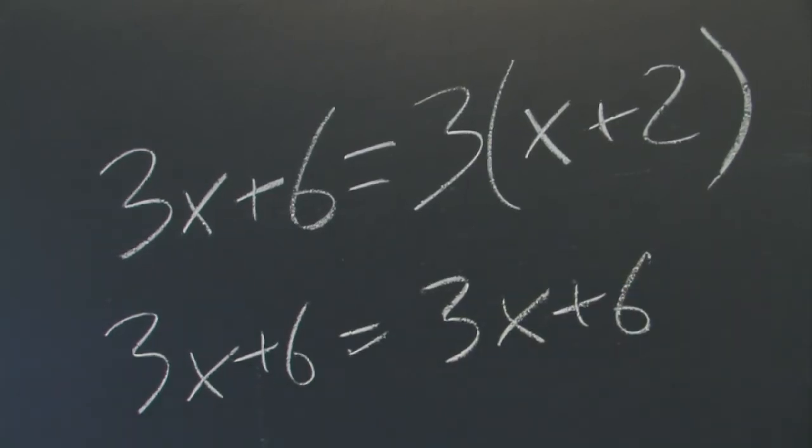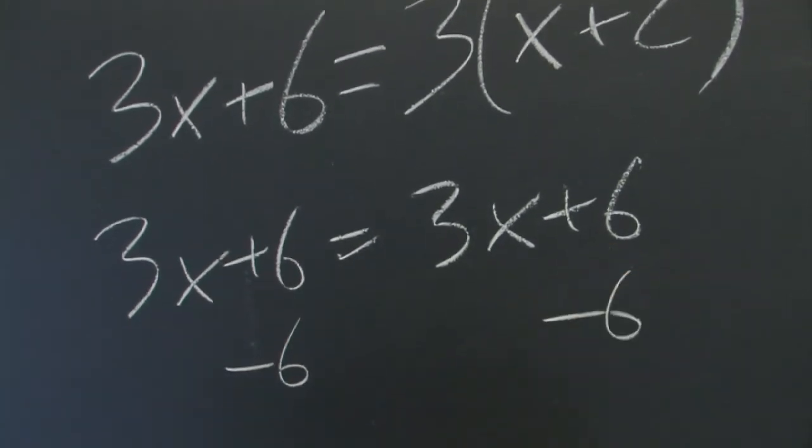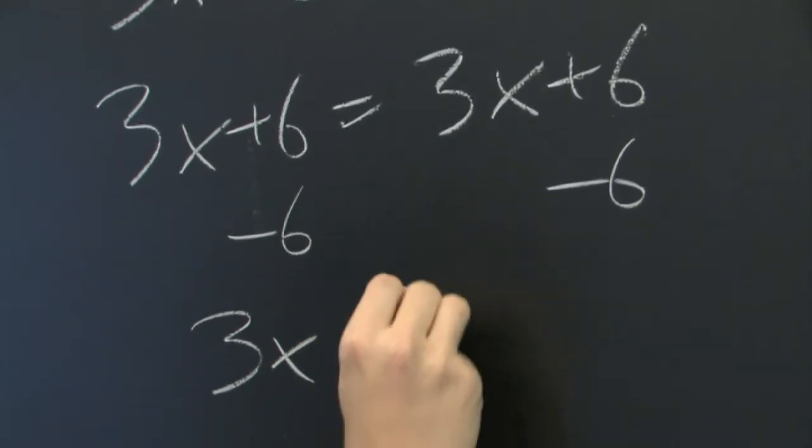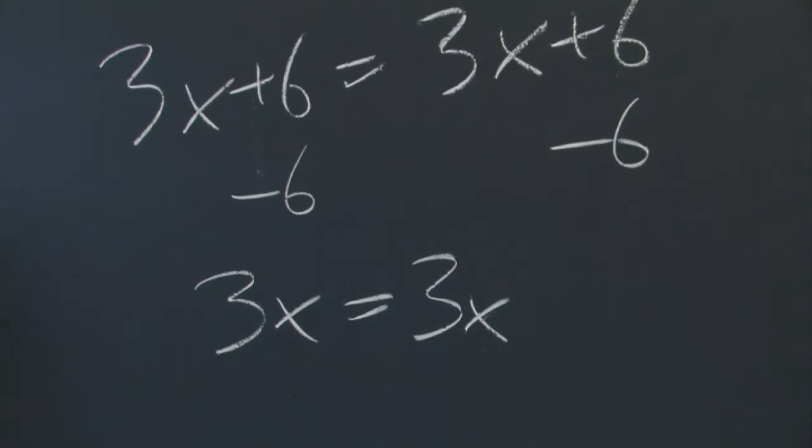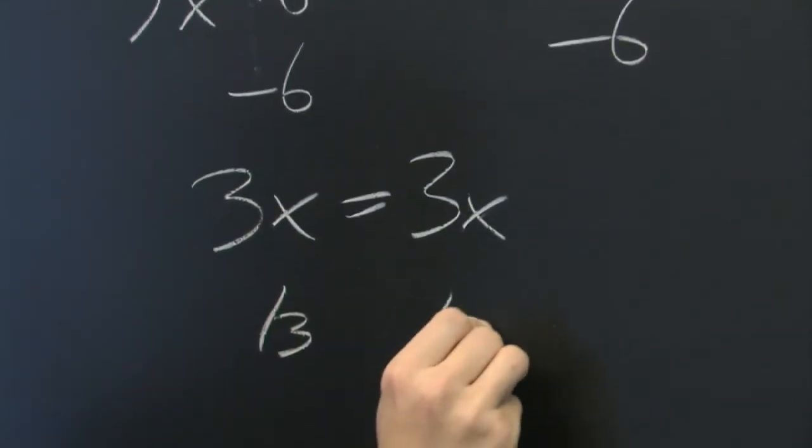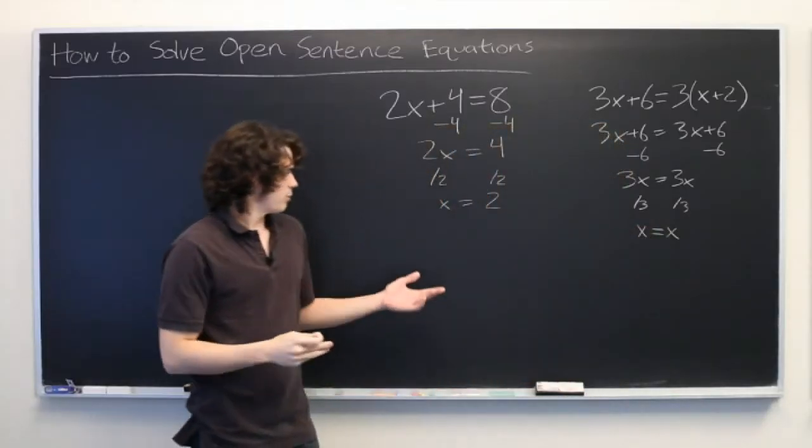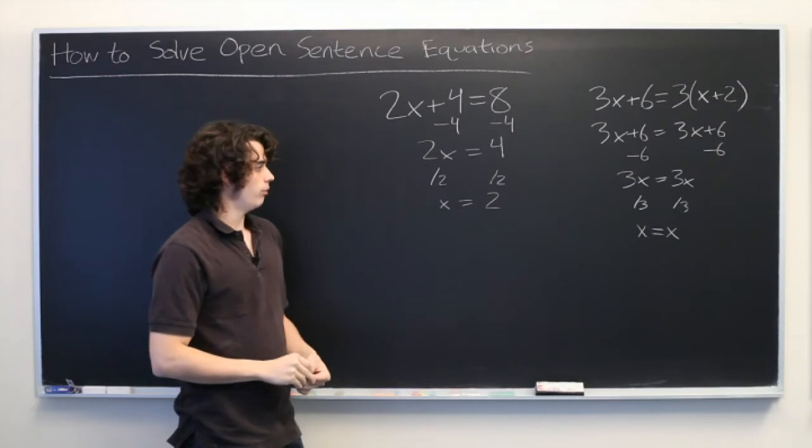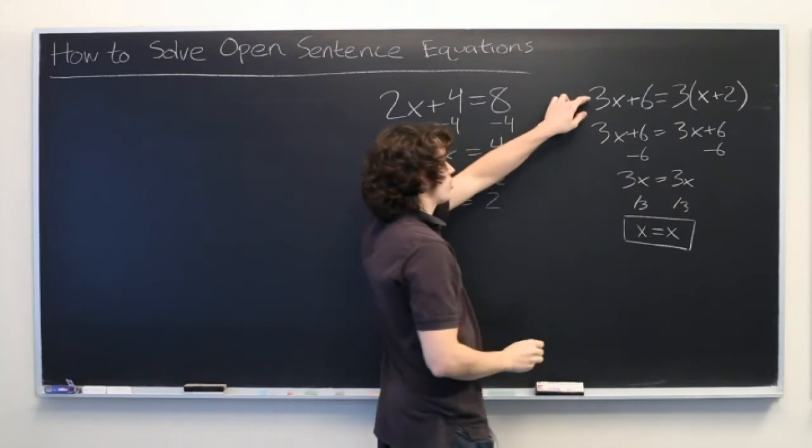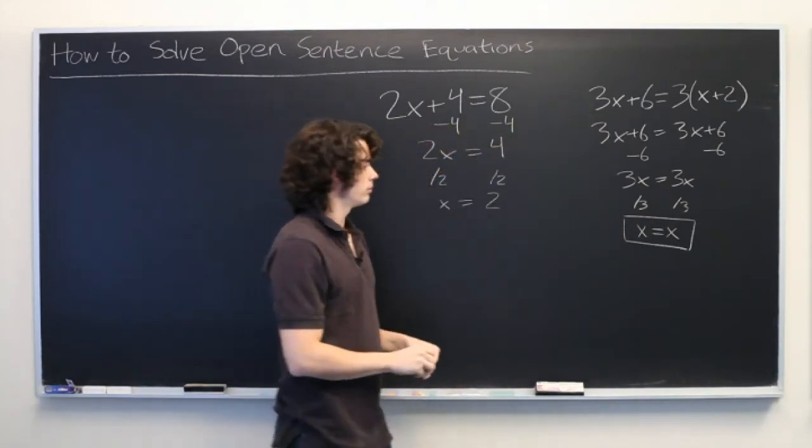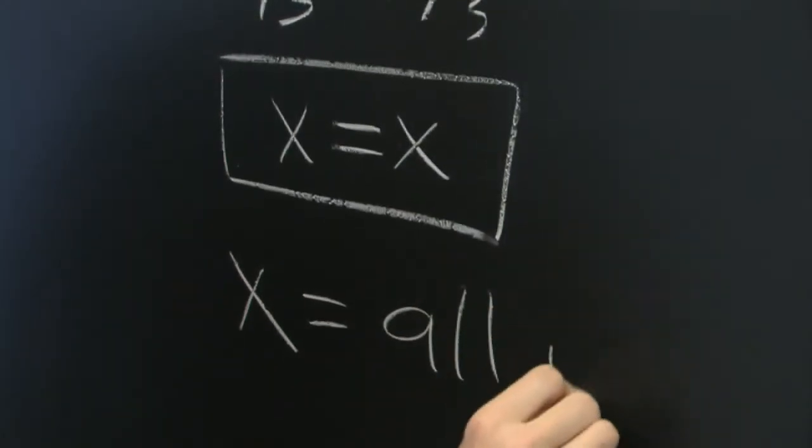Okay. Well, from here we can subtract 6 from both sides. And we get 3x equals 3x. And here we can divide by 3 on both sides. And we get x equals x. And you might think at this point that we've done something wrong or we haven't gotten anywhere useful. But what this tells us is that the equation we started with is true for all values of x. All values.